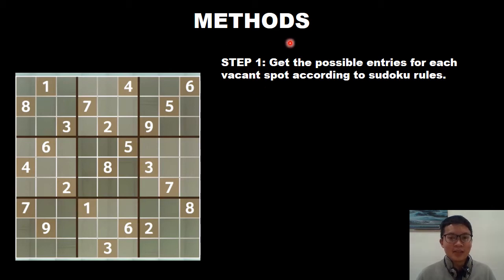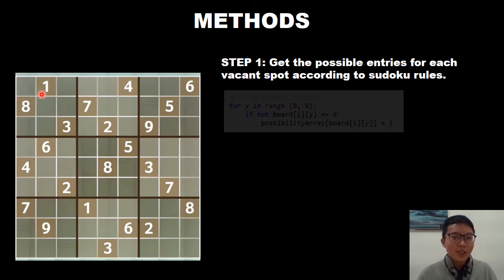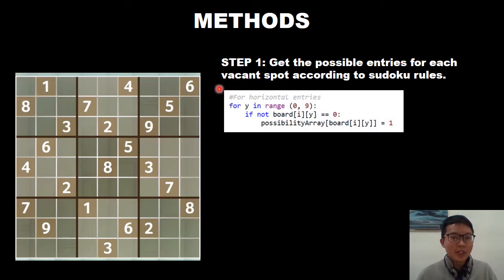I will talk about the methods. Step one: we get the possible entry for each vacant spot according to Sudoku rules. Let's focus on this vacant spot. For horizontal entry, we can look for the other values initiated in the Sudoku board. These values will be stored into an array.